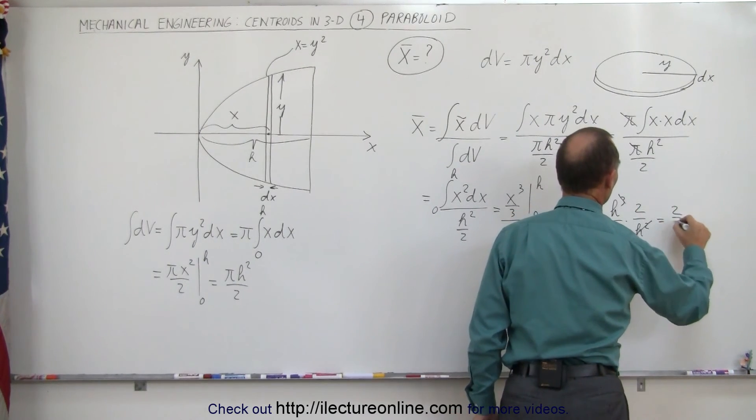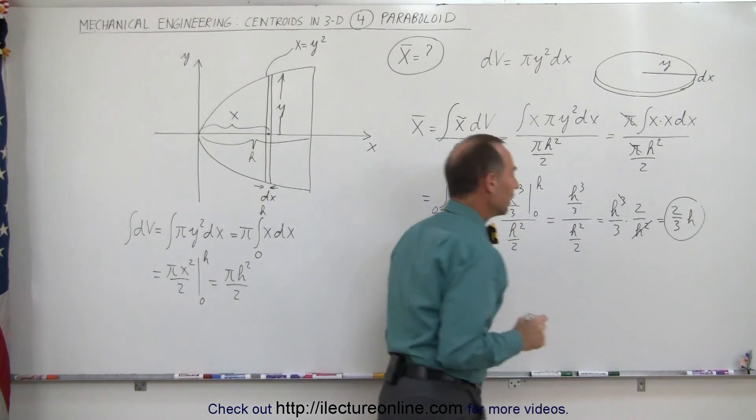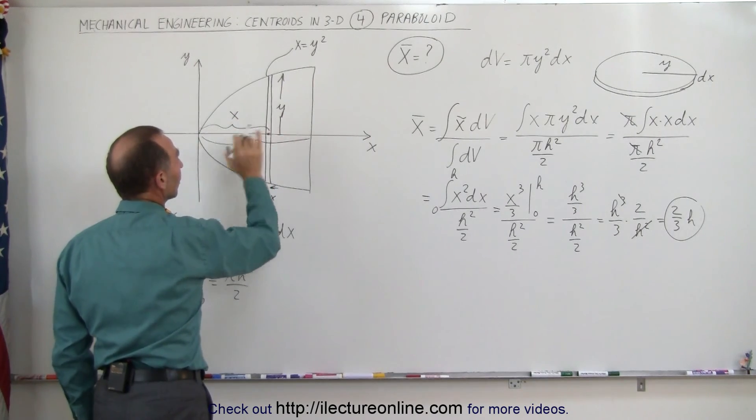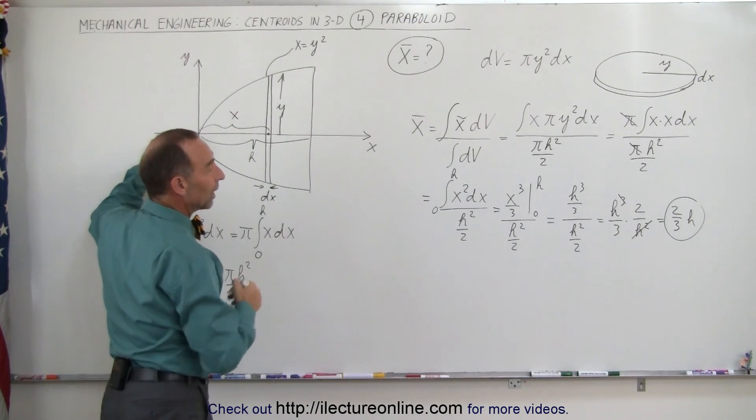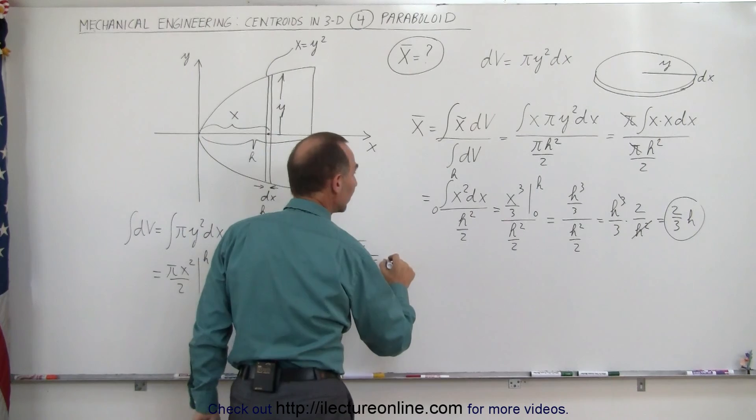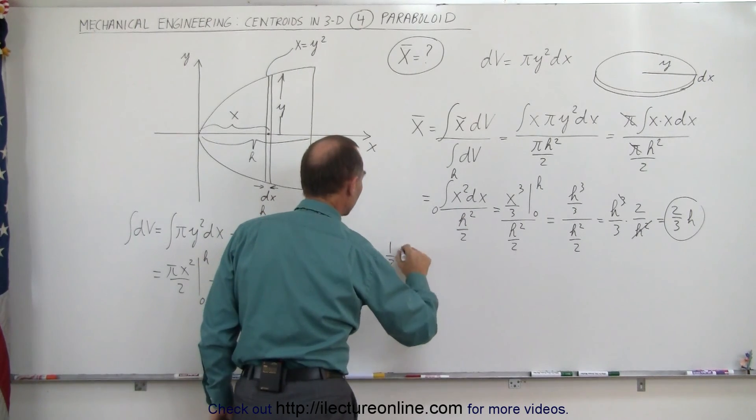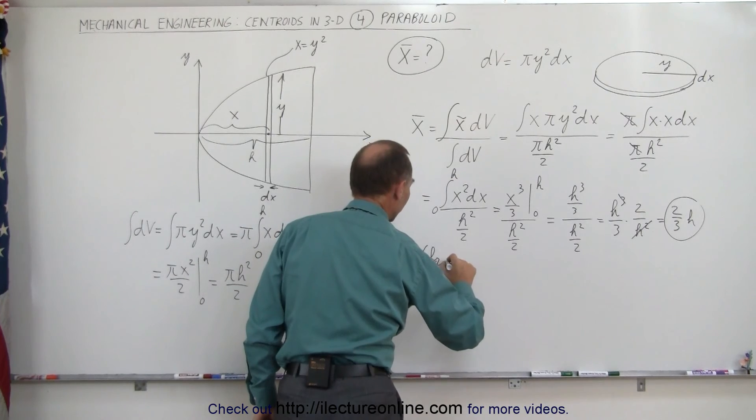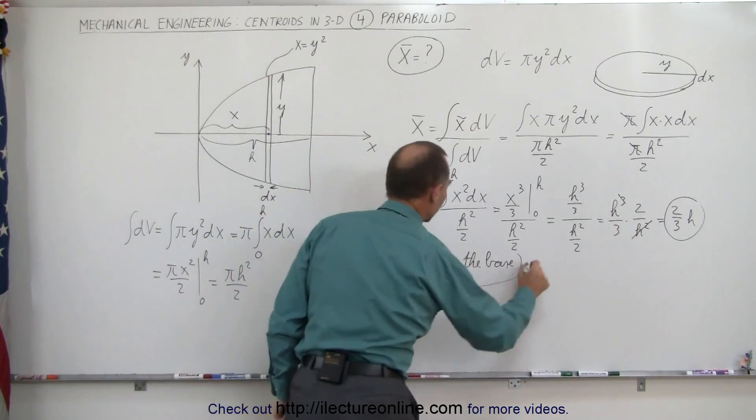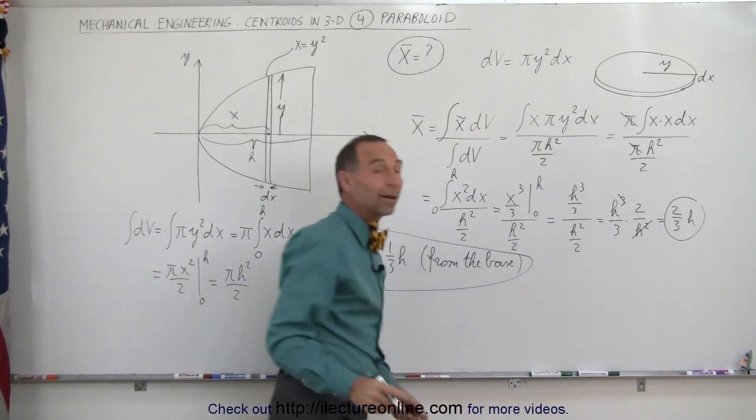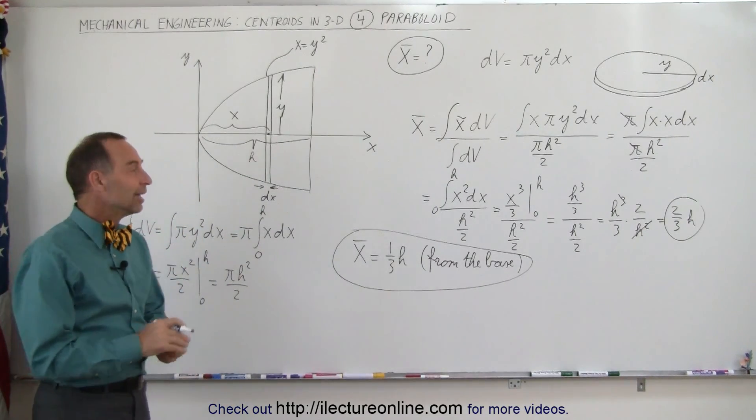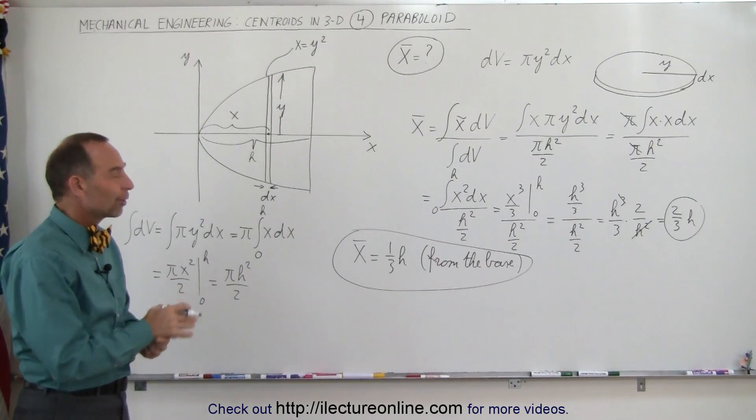Now remember, that is from the tip of the paraboloid, so the distance to the centroid from the origin is 2/3 h. Or we can say that x, the x-coordinate of the centroid of a paraboloid, is equal to h minus that, or 1/3 h from the base of the paraboloid. So we can either express it like this, or we can express it like that, depending upon your frame of reference. That is the x-coordinate of the centroid of the paraboloid.